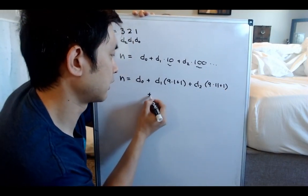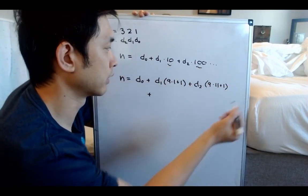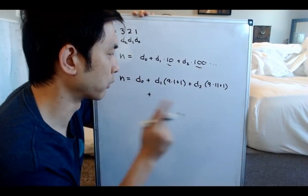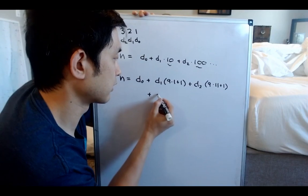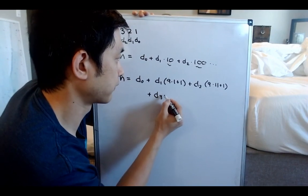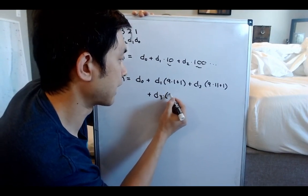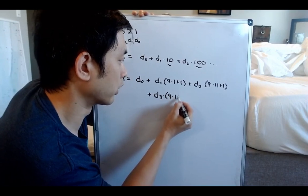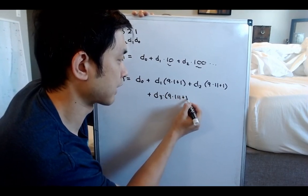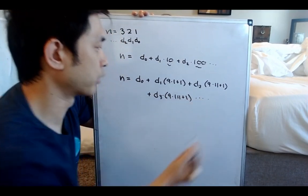And we can imagine, instead of using 10, 100, 11, we'll be adding the number 1 to these digits. So it's like here, it'll be a D3 times 9 times 111 plus 1, which is 1,000, and so on and so forth.